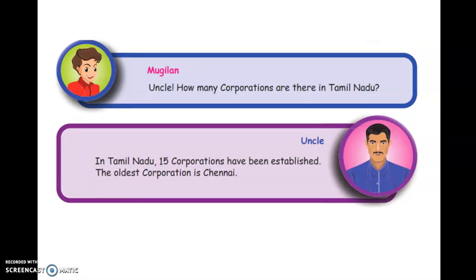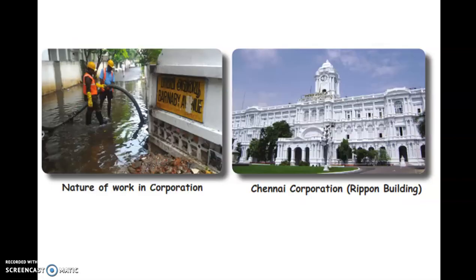Uncle, how many corporations are there in Tamil Nadu? In Tamil Nadu, 15 corporations have been established. The oldest corporation is Chennai. These are the works done by the corporation members, including removing drainage waters and rain waters. The Chennai corporation main office is called the Ripon Building.